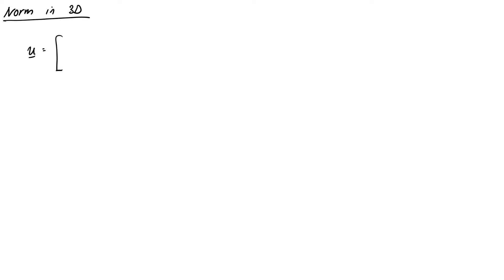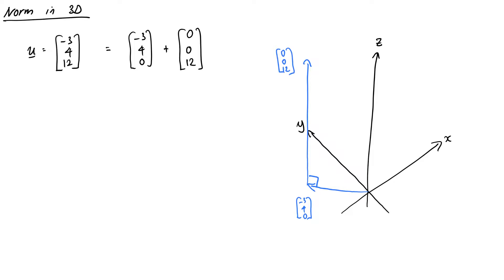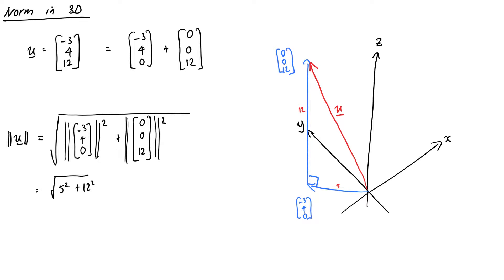Okay, what about 3D? Let's try and figure out the length of the vector u equals negative 3, 4, 12. First, we can split this into two vectors, u is equal to negative 3, 4, 0, plus 0, 0, 12. The first vector sits in the xy plane and has length 5. We just figured that out. The z component of 0 doesn't really do anything. And the second is at right angles to it and has length 12. Because the two vectors form a right-angled triangle with u, we can again use Pythagoras' theorem to figure out the overall length. So the length of u is the square root of the length of the vector negative 3, 4, 0, squared, plus the length of the vector 0, 0, 12, squared, which is the square root of 5 squared plus 12 squared, which in turn is the square root of minus 3 squared plus 4 squared plus 12 squared, which is the square root of 169, which just so happens to be 13.